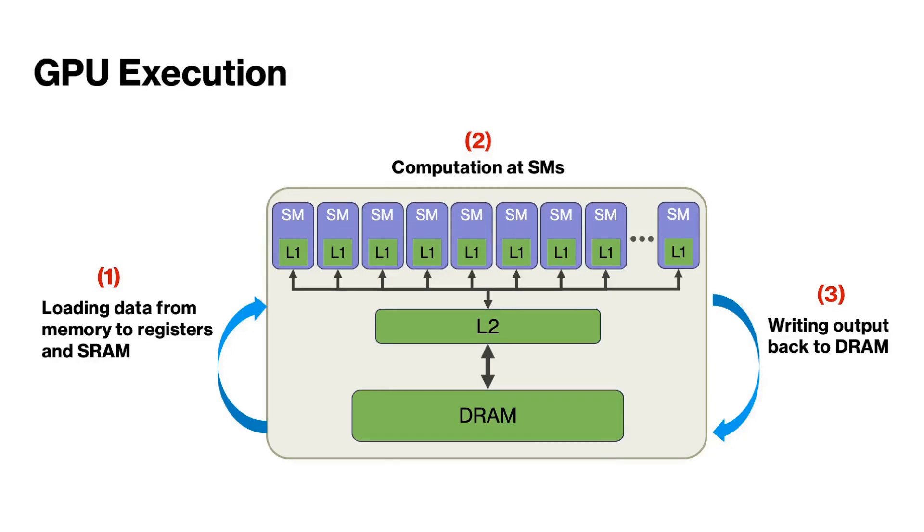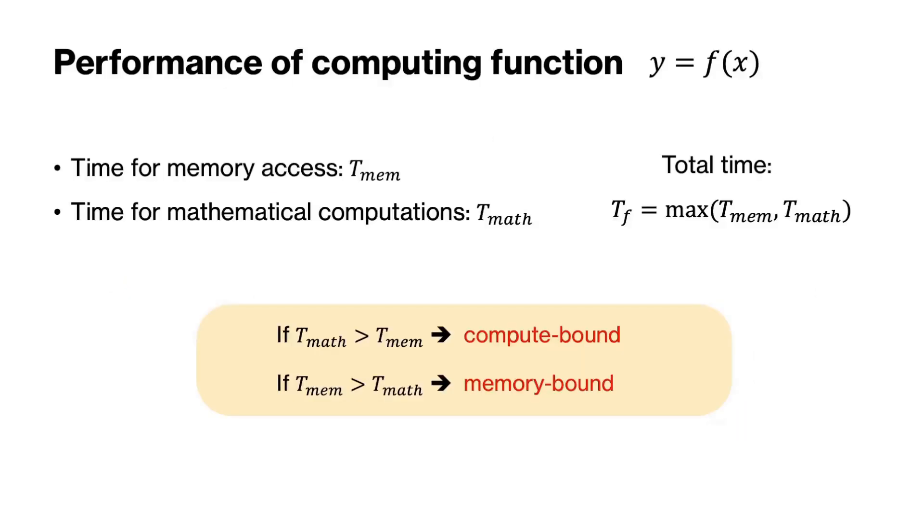This may not be a problem if the actual computation is heavy or at least heavier than accessing the memory. But for designing an efficient algorithm on a GPU, first we need to understand if the function that we want to calculate on a particular GPU is compute bound or memory bound. Let's assume we want to compute function y equals f of x. The total time for performing the mathematical operation is t-math and the time for all the memory accesses is t-mem. Since the memory access and computation can be overlapped, the total time is max of t-mem and t-math. If t-math is greater than t-mem, we say that this process is compute bound, otherwise it will be memory bound.